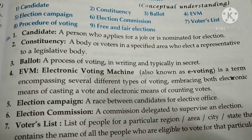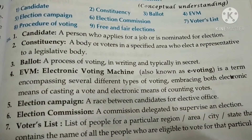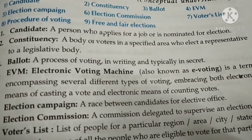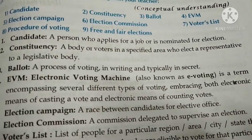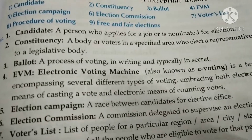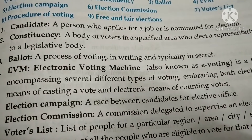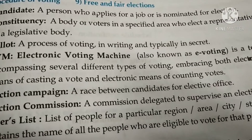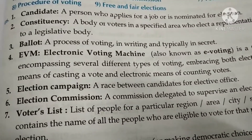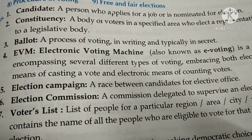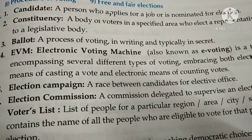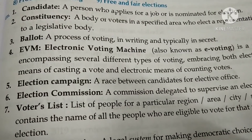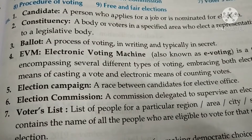A candidate means a person who applies for a job or is nominated for an election. Constituency means a body of voters in a specified area who elect a representative to a legislative body. Ballot is a process of voting in writing. EVM, electronic voting machine, also known as e-voting, is a term encompassing several different types of voting, embracing both electronic means of casting a vote and electronic means of counting votes.